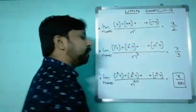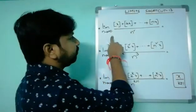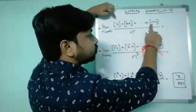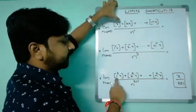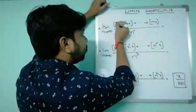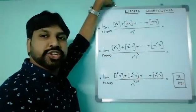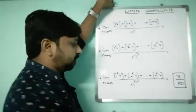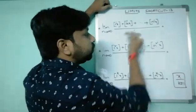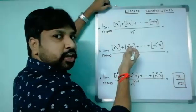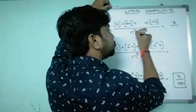Now applying this: for the limit of bracket X plus bracket 2X plus so on plus bracket NX divided by N squared, the terms are 1^1, 2^1, 3^1, ... N^1 in the numerator and N^2 in the denominator. Check whether it fits the formula — yes, the power is 1 throughout, and the denominator is N^(1+1) = N^2. So we apply the shortcut: numerator gives X, and denominator is just the power, which is 1+1 = 2. The answer is X by 2.